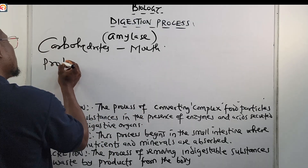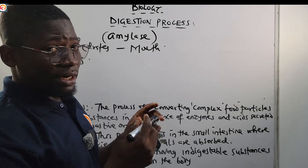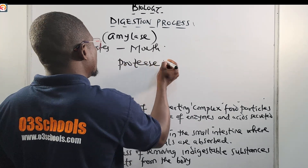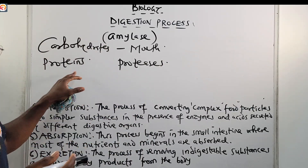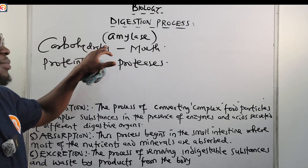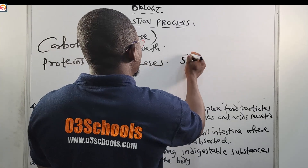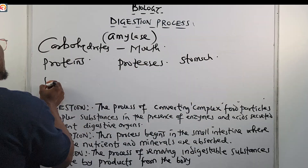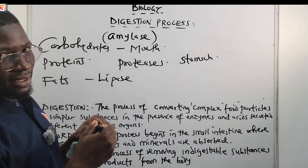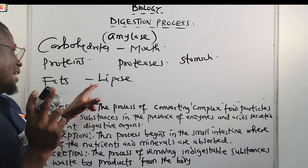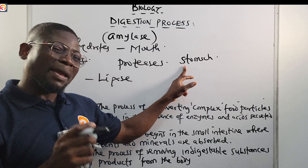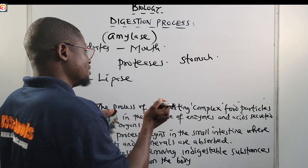For proteins, the pancreas produces an enzyme called protease, which helps to digest proteins. Digestion of proteins begins from the stomach. For fats, the enzyme called lipase helps to digest fats. Digestion of fats can begin in the stomach, but the bulk of fat digestion happens in the small intestine. So: carbohydrates — amylase — begins in the mouth; proteins — protease — begins in the stomach; fats — lipase — bulk begins in the small intestine.